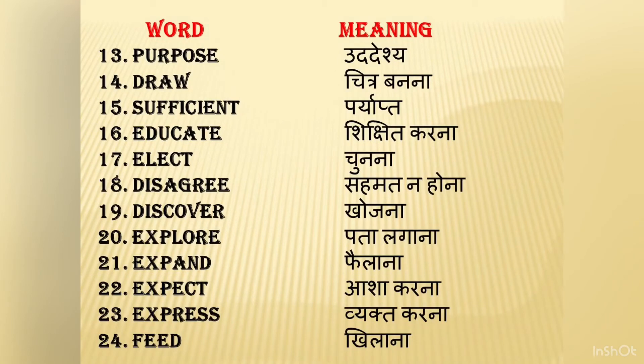Let's review once more. Purpose means uddeshya. Draw means chitra banana. Sufficient means paryapt. Educate means shikshit karna. Elect means chunna. Disagree means sahmat na hona. Discover means khojana. Explore means pata lagana. Expand means failana. Expect means asha karna. Express means vyakt karna. Feed means khilana. Please note all these words and make one or two sentences from each, and practice speaking them.